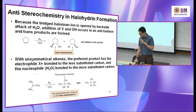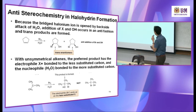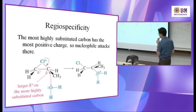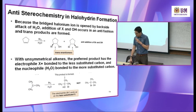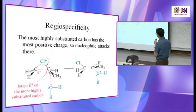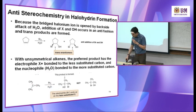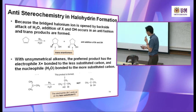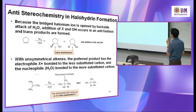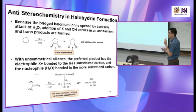This is the anti stereochemistry in halohydrin formation because the halonium ion is opened by back-side attack. Addition of X and OH occurs in an anti fashion, so a trans product is formed. For a cyclic alkene, one group is up and one is down — this is the trans anti-addition product.